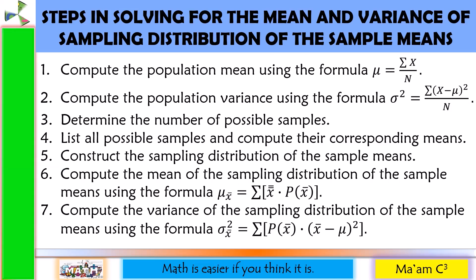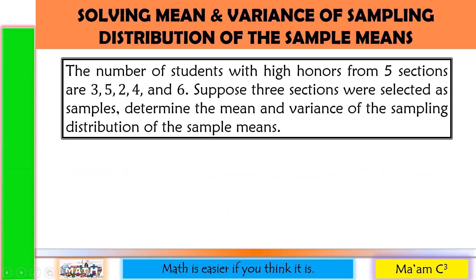Here are the steps in solving for the mean and variance of the sampling distribution of the sample means. I will discuss this one by one with an example. The number of students with high honors from five sections are 3, 5, 2, 4, and 6. Suppose three sections were selected as samples. Determine the mean and variance of the sampling distribution of the sample means.